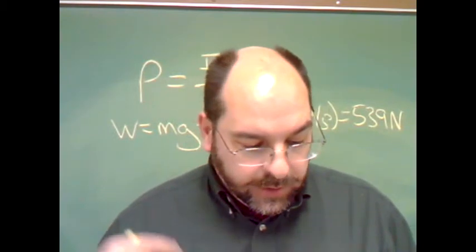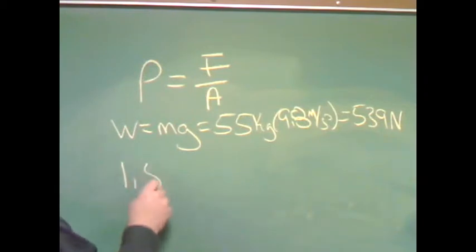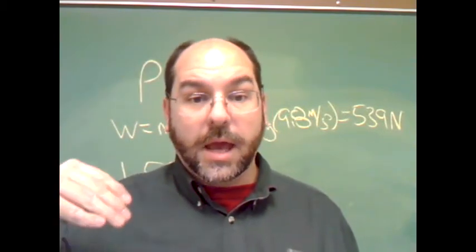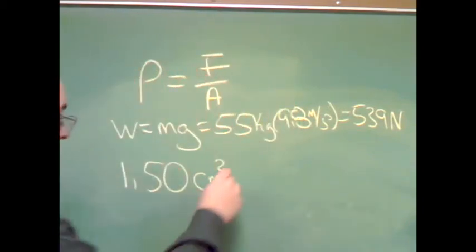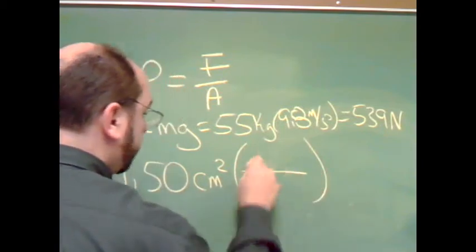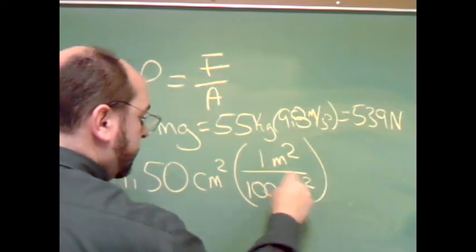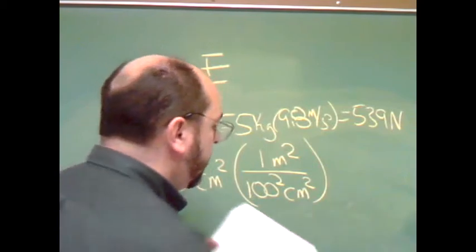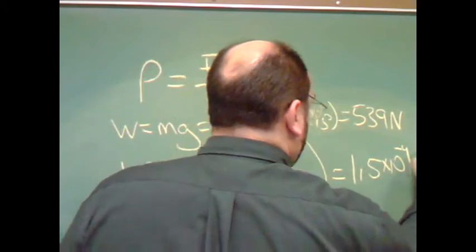Now the area. The area they gave us is 1.5 centimeters squared, but we need this to be in meters squared to get force in newtons and area in meters squared for pascals of pressure. So 1 meter squared, 100 centimeters, 100 squared, centimeters squared in a meter squared gives us an area of 1.5 times 10 to the negative 4 meters squared.